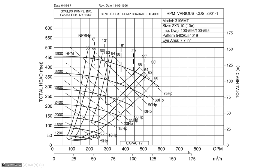On the horizontal axis is capacity, meaning flow rate, in both cubic meters per hour and gallons per minute, so you can use either SI or traditional units. On the vertical axis, head is in feet on the left-hand side and meters on the right-hand side, again allowing either set of units.